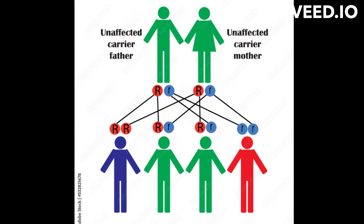Transmission genetics also includes the study of complex traits, which are determined by multiple genes and are influenced by environmental factors and chance. Complex traits are most common in humans, such as heart disease, diabetes, and cancer, and their study can help to understand the genetic and environmental factors that contribute to their development.